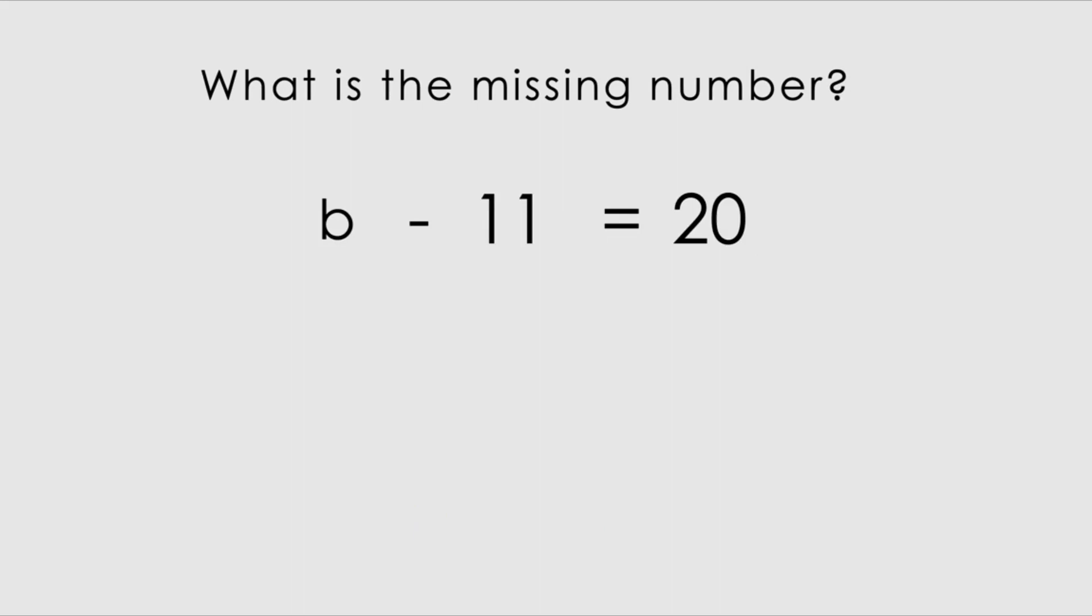Now let's try this question. We've got b minus 11 equals 20. So now we can see that b has to be bigger than 11 and 20, and b is 11 more than 20. So 11 plus 20 gives us 31. Let's try 31 minus 11 equals 20. Now let's check. Do you think this is correct? 31 minus 11 gives us 20? Yep. So b is actually equals to 31.